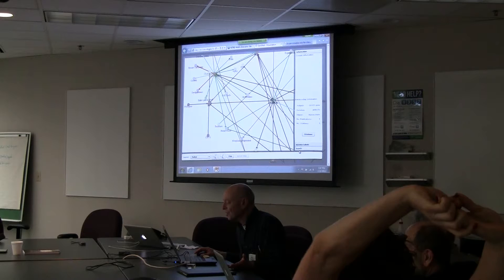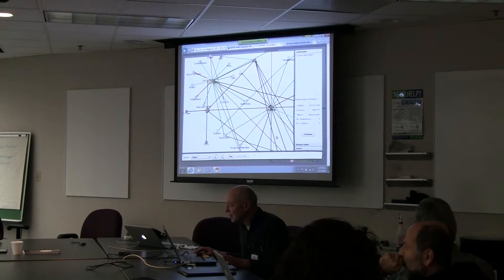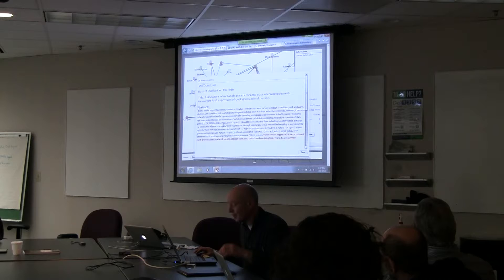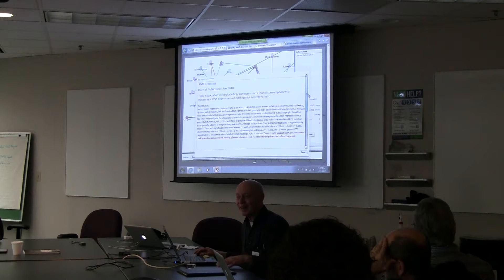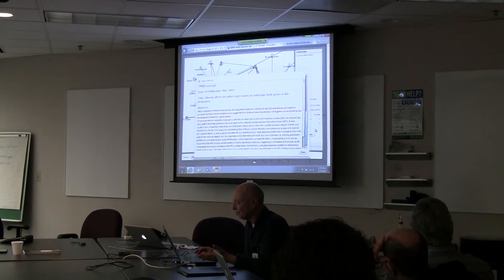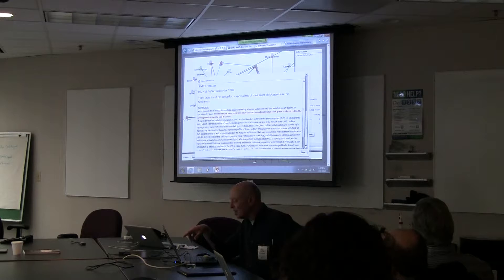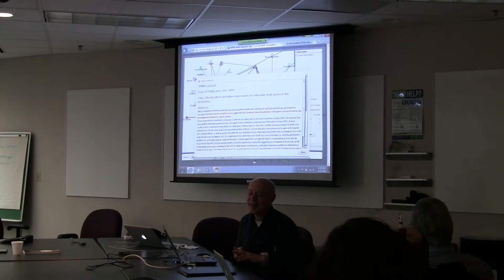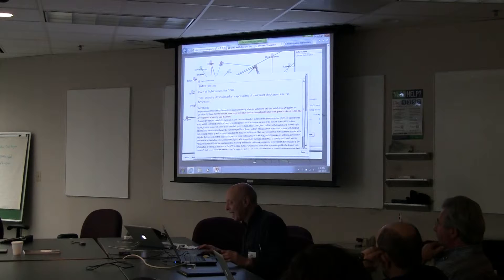The next thing we can see is the clock genes associated with obesity, which seems rather surprising. Here's a paper from just a couple of years ago: 'Obesity alters circadian expression from molecular clock genes in the brainstem.' So there's a strong relationship — an interaction between the two — and until a few years ago, this was totally not known.